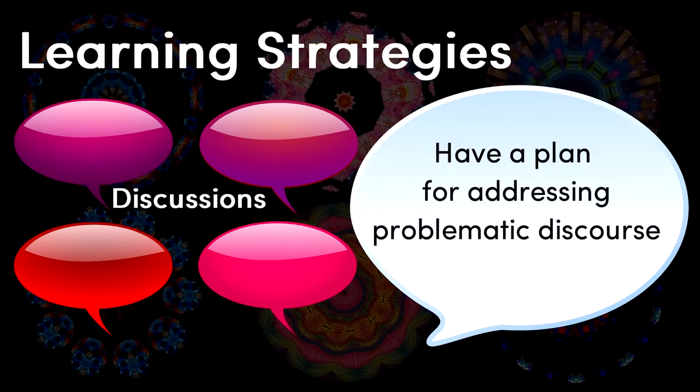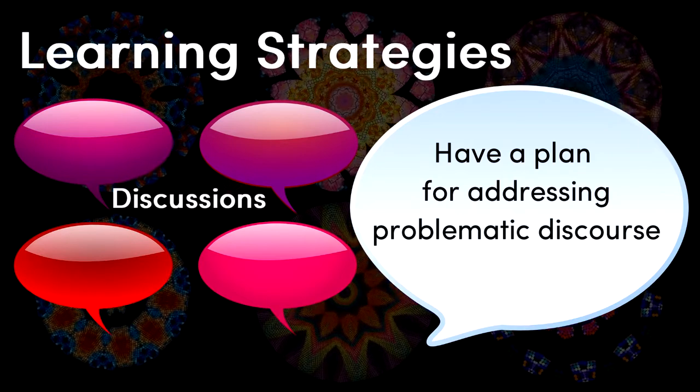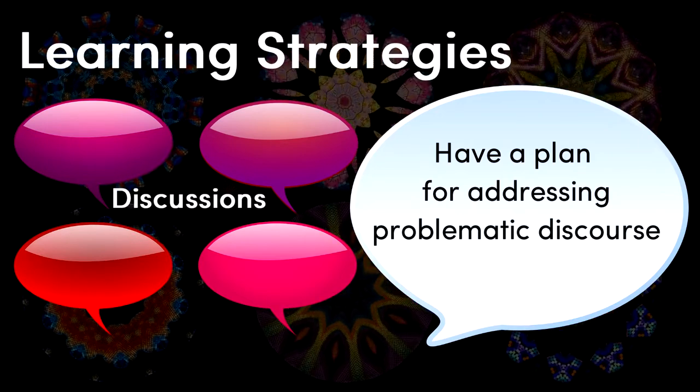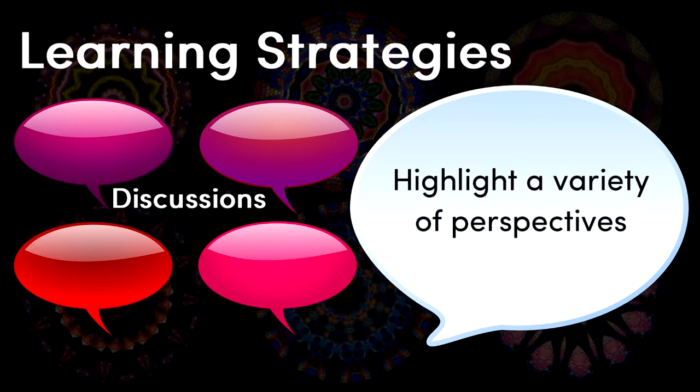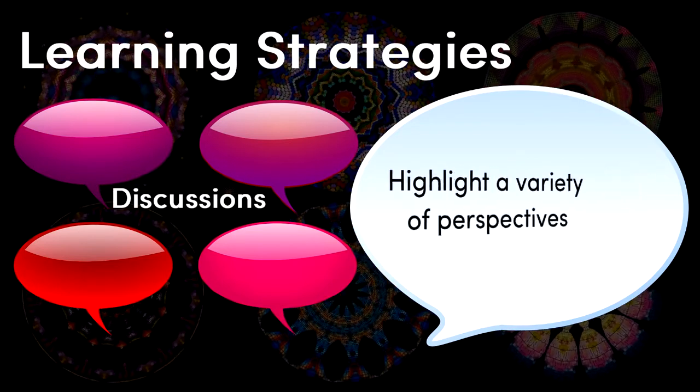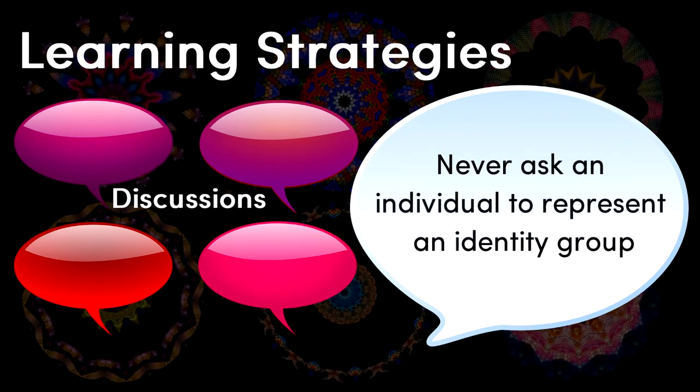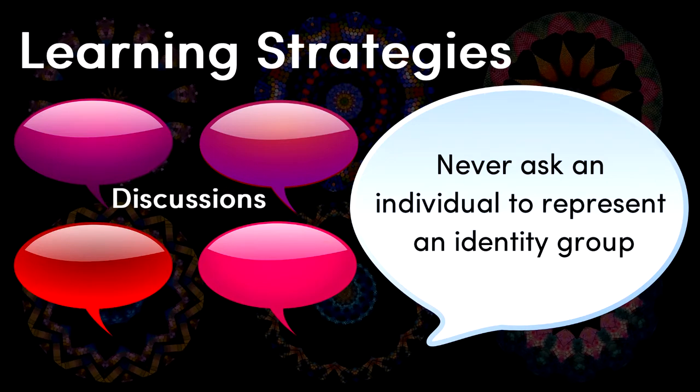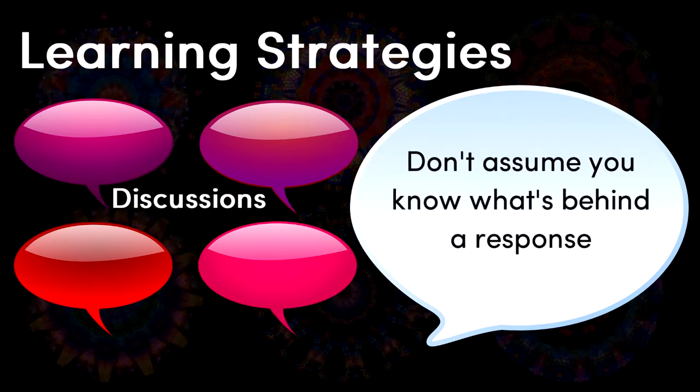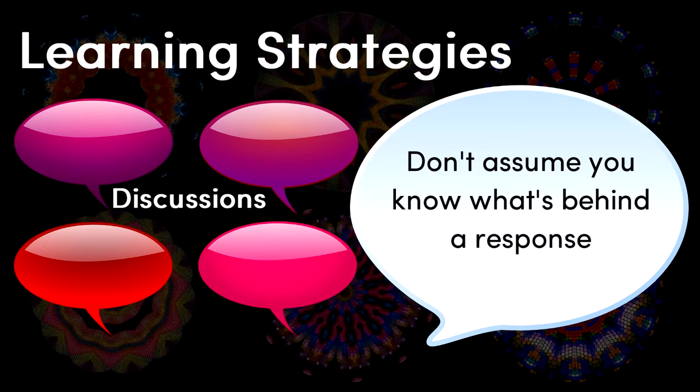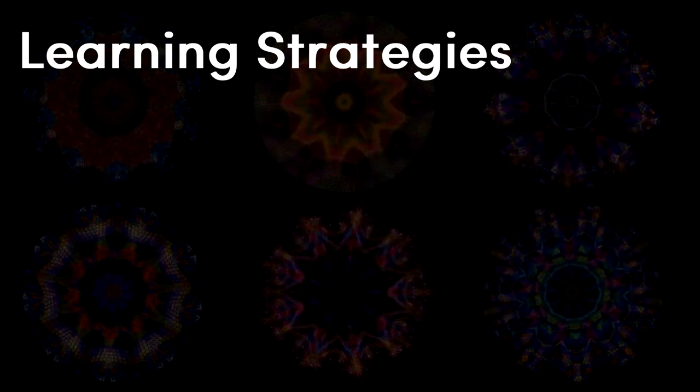Have a plan in place for addressing problematic generalizations or assumptions that might arise in a discussion. Now once discussions are underway, highlight submissions from a variety of students and perspectives. Ensure an individual is never put in the position of speaking for an entire identity group. Provide room for students to explain the reasoning behind statements. Always try to be careful not to assume that you know why a learner framed a particular problem or question the way they did.